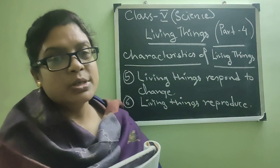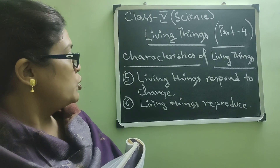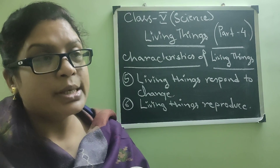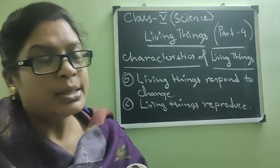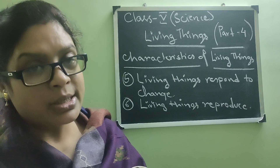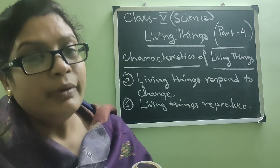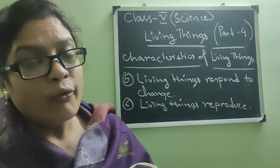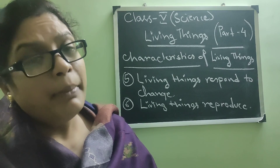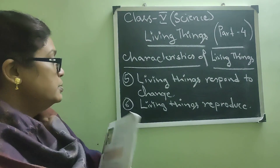Hello Class 5, welcome to your science online class. We will discuss the remaining two characteristics of living things. If you go through books, you will see many characteristics are there, but these are the main six. The first four we have already discussed: living things move on their own, need food, air and water, are made up of cells, and grow and change.